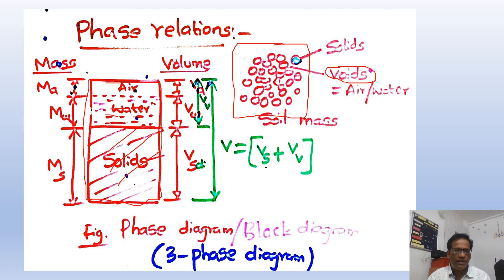Now we can see three phases here: first one is solids, followed by water and air. Here one can clearly see the three components of soil in an imaginary diagram. This diagram is called a phase diagram—you can see three phases here: solid phase, water phase, air phase. This is also called a block diagram. Thank you all.